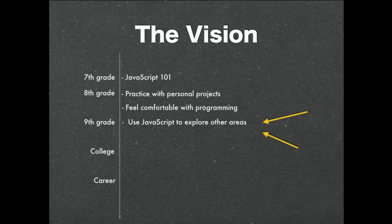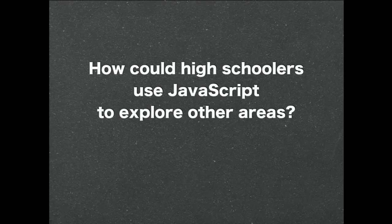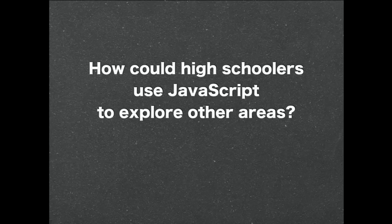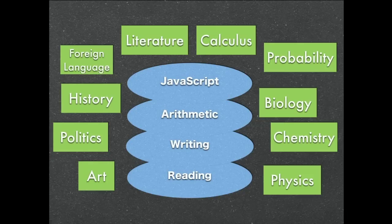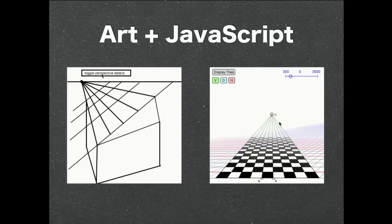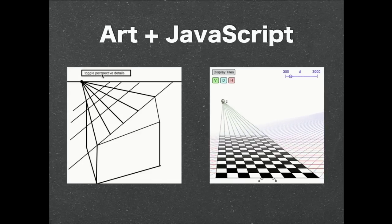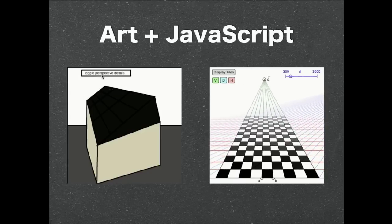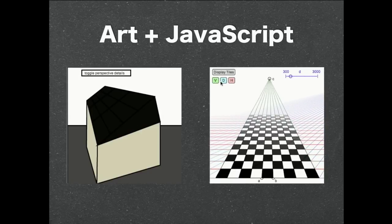So they get comfortable, they use it for fun stuff. And then in high school, that's where it gets interesting. They could actually start using JavaScript to explore other areas, because that's the whole point. With reading, writing, arithmetic, you learn it so you can explore all the other areas we go on to learn. So what would happen if we added on JavaScript? Here with art, these people on Khan Academy made examples to show linear perspective.